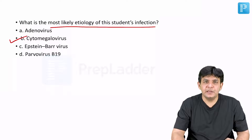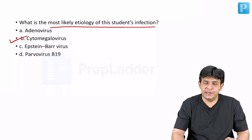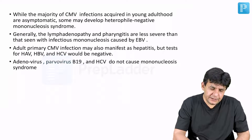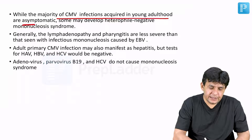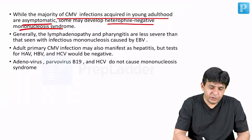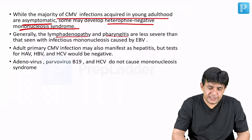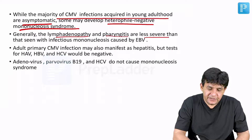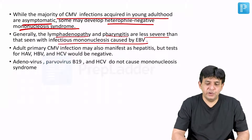Why? Because in EBV infection, the heterophil agglutination test or heterophil antibody test is positive. The majority of CMV infections occur in young adulthood and they are asymptomatic. Some may develop heterophil-negative mononucleosis-like syndrome, which presents with lymphadenopathy and pharyngitis. But this is less severe compared to infectious mononucleosis caused by Epstein-Barr virus.